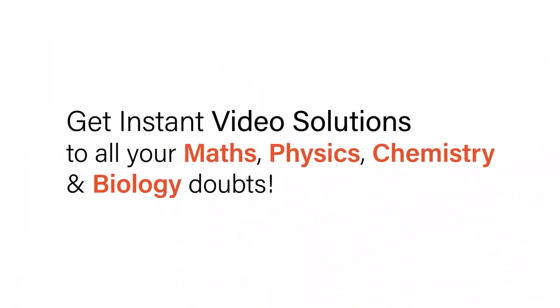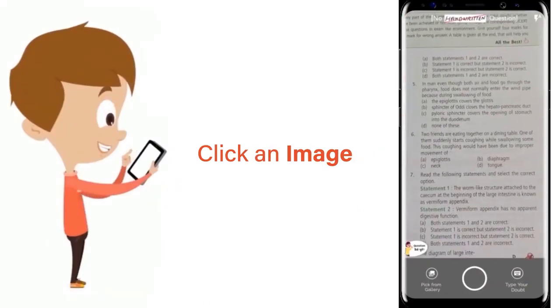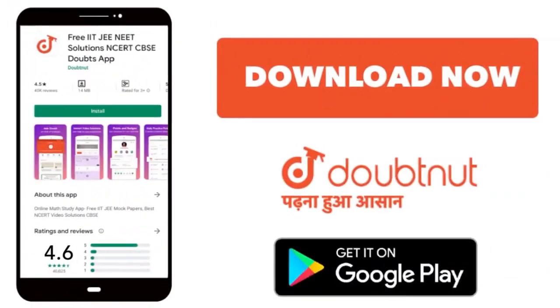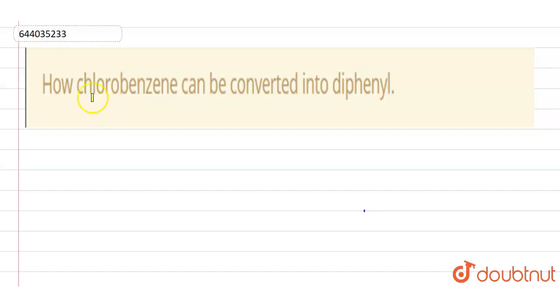With Doubtnet, get instant video solutions to all your maths, physics, chemistry, and biology doubts. Just click the image of the question, crop the question, and get instant video solution. Download Doubtnet app today. Hello, the question is how chlorobenzene can be converted to diphenyl.